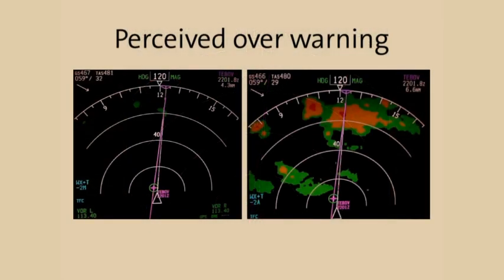When Multiscan paints the core red, as in this picture, and the edges of the cell are displayed as yellow and green, these crews consider the radar to be over warning.